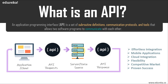API stands for Application Programming Interface, which is a software intermediary that allows two applications to talk to each other without any glitches. Every time you use an app like Facebook to send an instant message, or check the weather on your phone, you are using an API. Why use an API? First, it offers effortless integration — it allows customers to access data, servers, or any other application in a very stable and secure way.